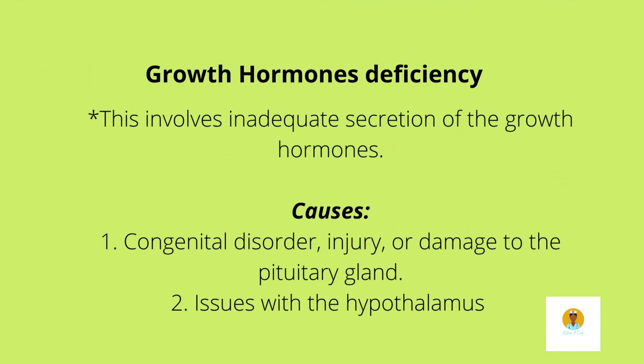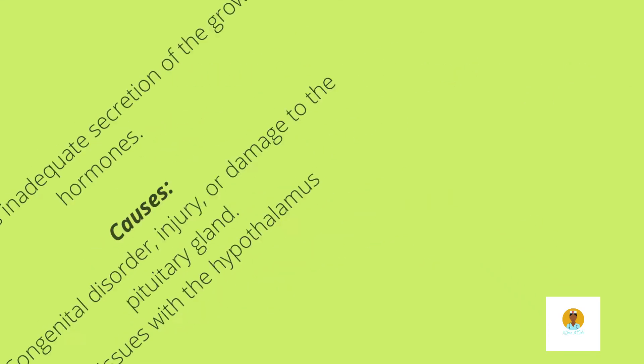Growth hormone deficiency is where we have inadequate secretion of the growth hormone from the anterior pituitary gland. This may be due to a congenital disorder, an injury or damage to the pituitary gland, or it could be an issue with the hypothalamus. The hypothalamus produces the growth hormone releasing hormone, GHRH, and this allows for the secretion of the growth hormone.